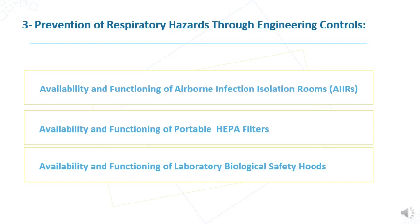The third major element of the Respiratory Protection Program is prevention of respiratory hazards through engineering controls. This includes availability and functioning of airborne infection isolation rooms, availability and functioning of portable HEPA filters, and availability and functioning of laboratory biological safety cabinets.